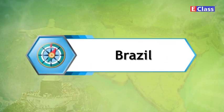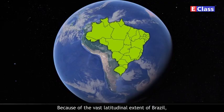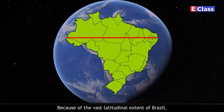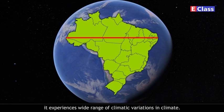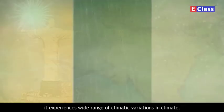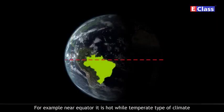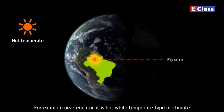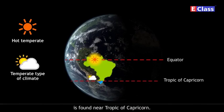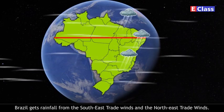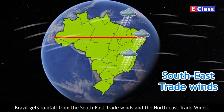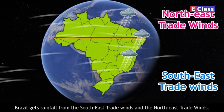Brazil experiences a wide range of climatic variations because of its vast latitudinal extent. For example, near the equator it is hot, while a temperate type of climate is found near the Tropic of Capricorn. Brazil gets rainfall from the southeast trade winds and the northeast trade winds.